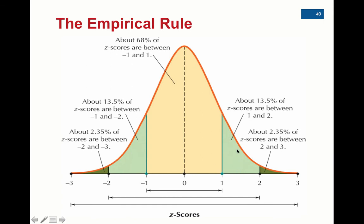That's how you get 13.5% between negative one standard deviation and negative two standard deviations, and one standard deviation above and two standard deviations above.